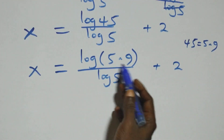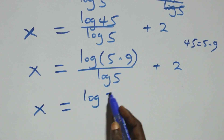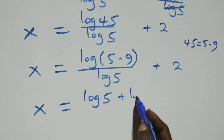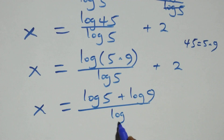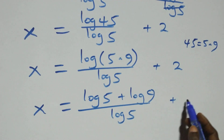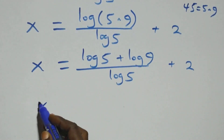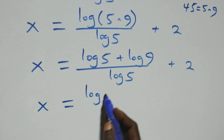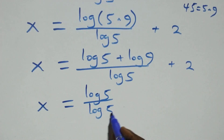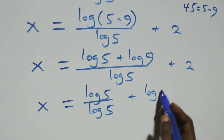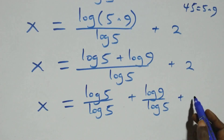This follows the log product rule, and it becomes x equals to log 5 plus log 9, all over log 5, plus 2. When we separate this into two fractions, this becomes x equals to log 5 over log 5 plus log 9 over log 5 plus 2.